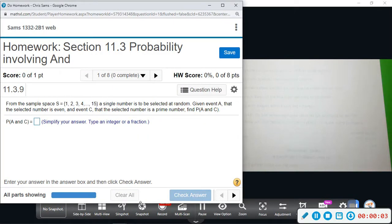Alright, 11.3. This is probability involving 'and', and usually when we see the word 'and' that tells us to multiply. So this one says from the sample space S, which is the numbers 1, 2, 3, dot dot dot up to 15, a single number is selected at random. Given event A, that the selected number is even, and event C, that the selected number is prime, find the probability of A and C.